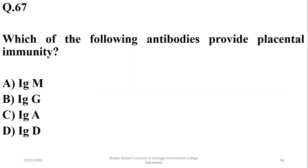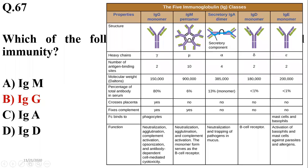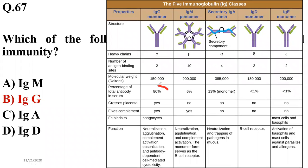Which of the following antibodies provide placental immunity? Out of five groups of antibodies, only one type can cross the placental barrier — they are immunoglobulin type G (IgG). So B is the right option. As seen in the comparative table, the most abundant type of antibodies, immunoglobulin G, can cross the placental barrier.